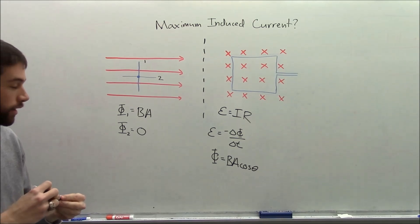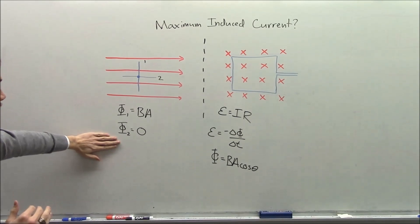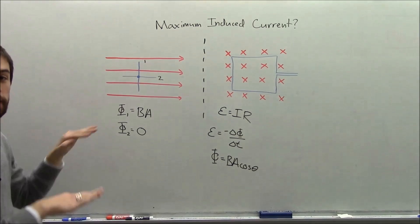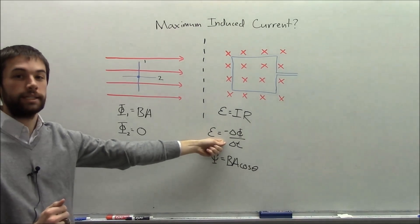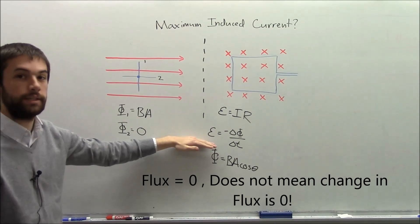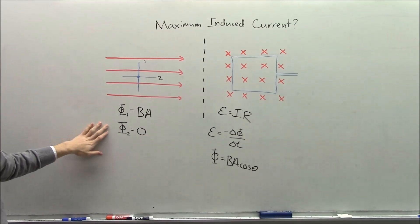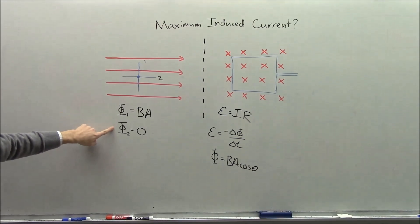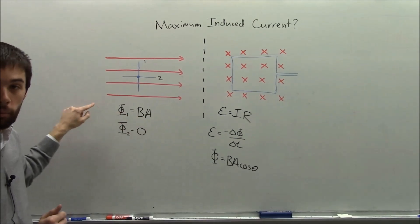And here is where I implore you to stop and not finish the problem here. Because just because the flux is zero does not mean that the change in flux is zero. And this is the key realization about this question: it's the change in flux that will cause an induced EMF, not the flux itself. So just because the flux in position one is greater than in position two doesn't mean that the induced EMF is bigger in one than in two.